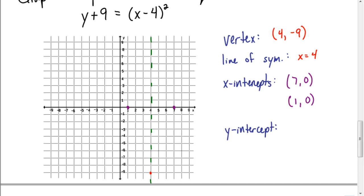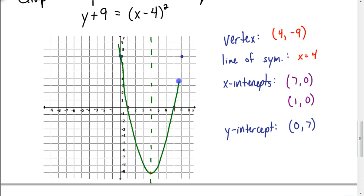Lastly, the y-intercept — when you plug 0 in for x, you should have gotten the coordinate (0, 7). Unlike the other parabola we did, (0, 7) does fit on this grid. So to find a fifth point, I'm going to take that y-intercept and reflect it over the line of symmetry. The y-intercept is 4 units to the left of the line of symmetry, so I put another point 4 units to the right. Finally, we can graph this parabola by connecting all these points.